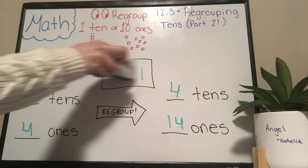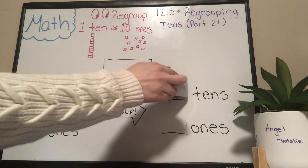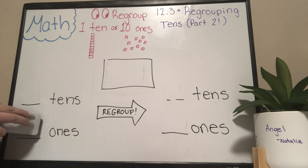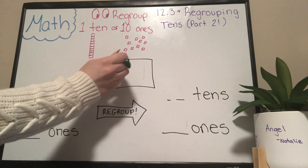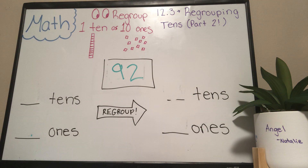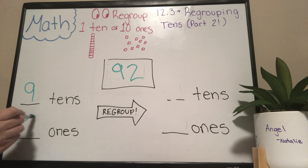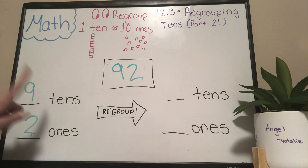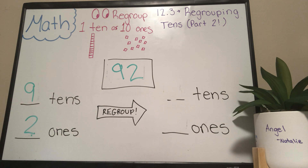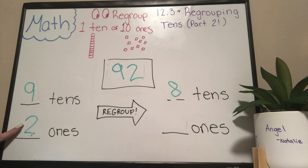Now we're going on to the next question, which gives us the number ninety-two. How many tens are in ninety-two? There are nine tens. How about ones? Two ones. Take away one ten — nine minus one equals eight. Two plus ten? Twelve.